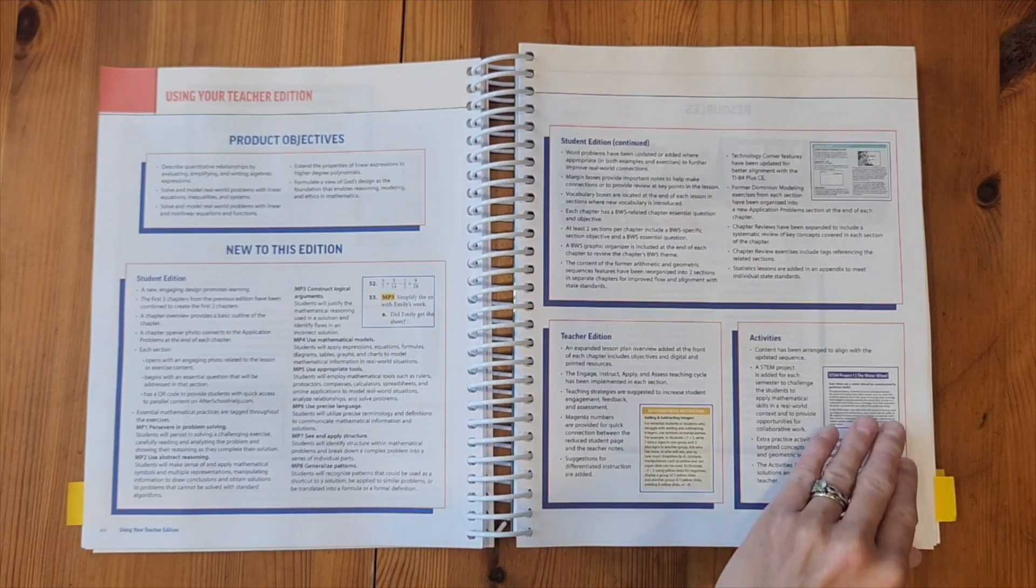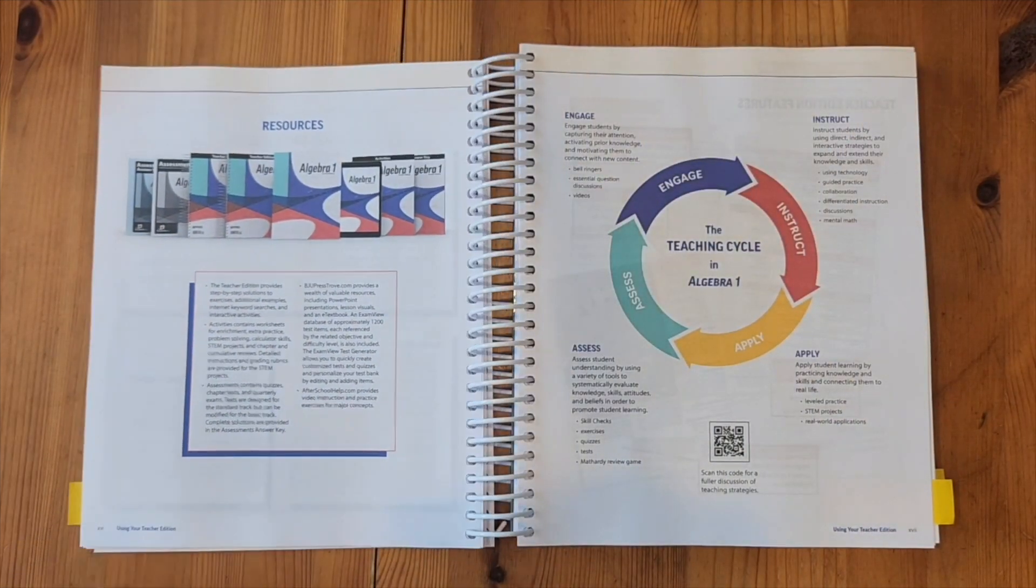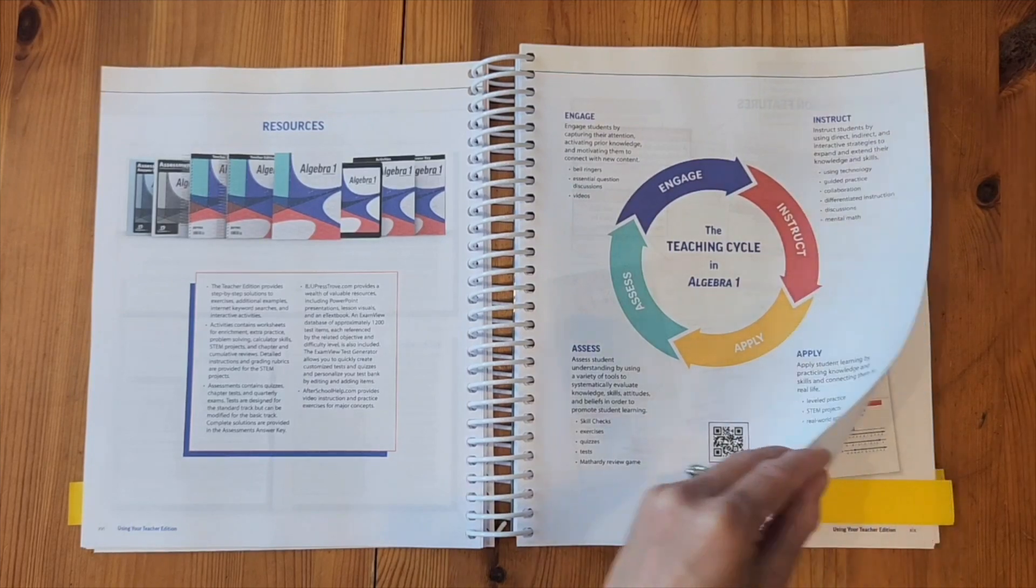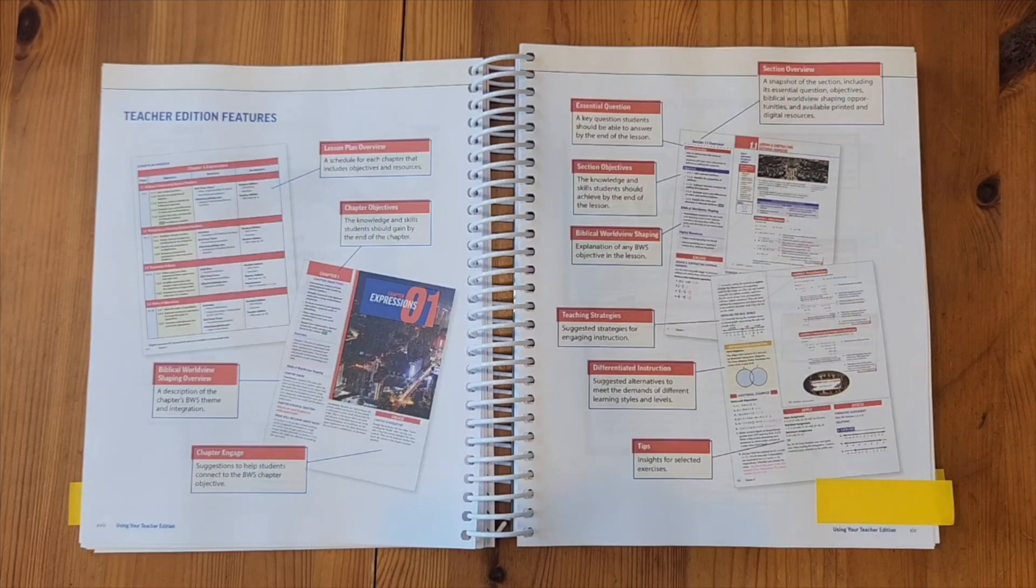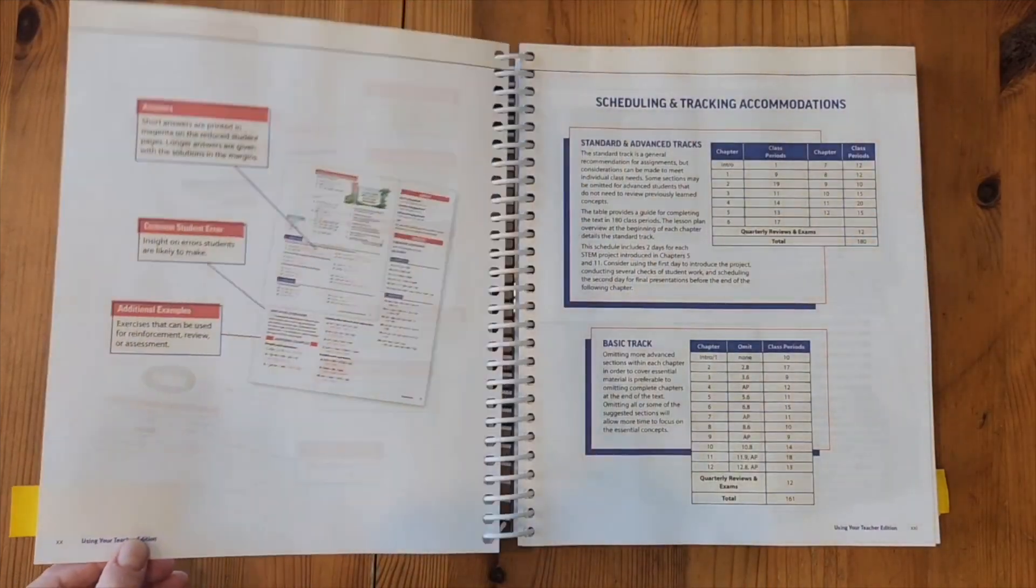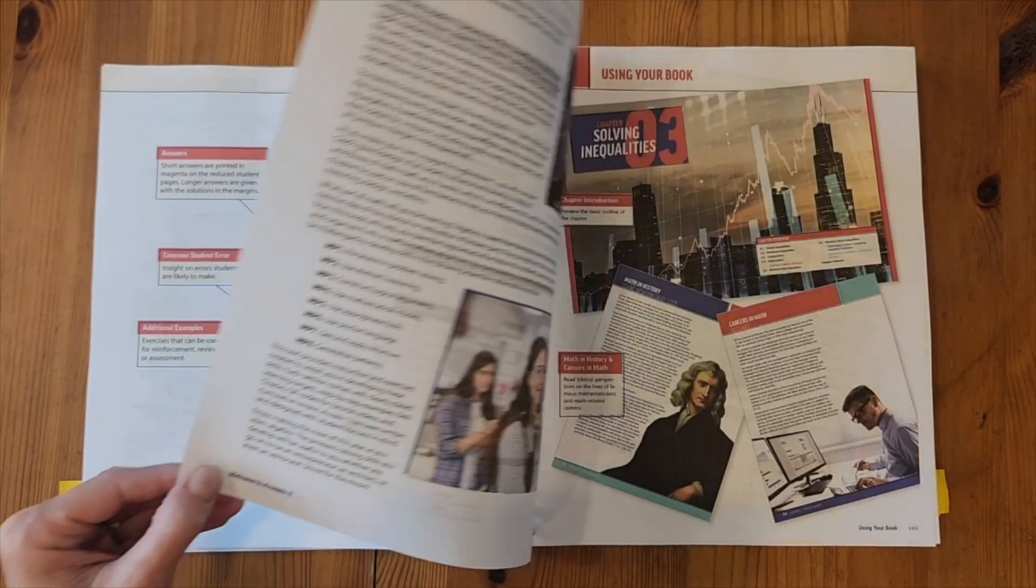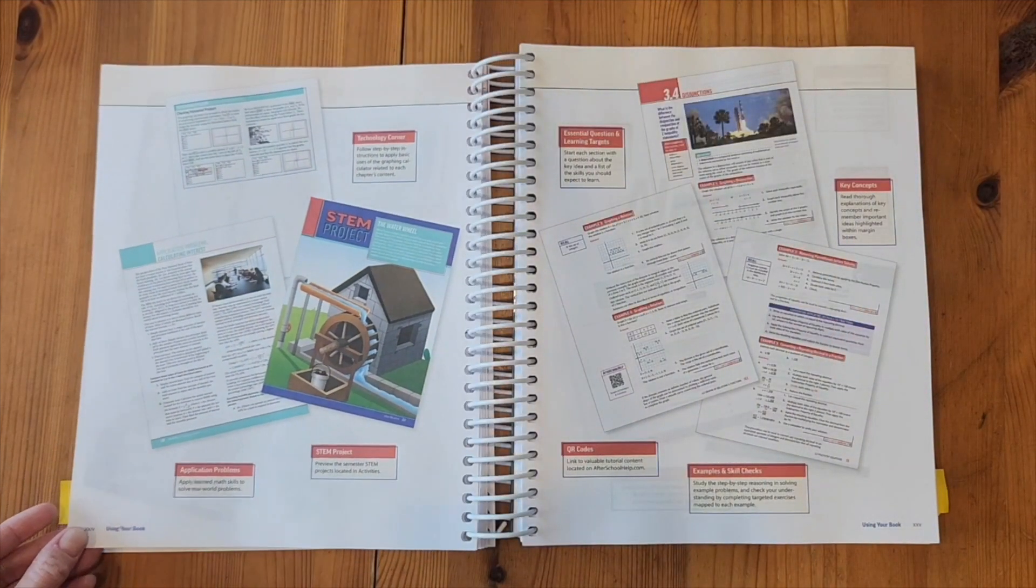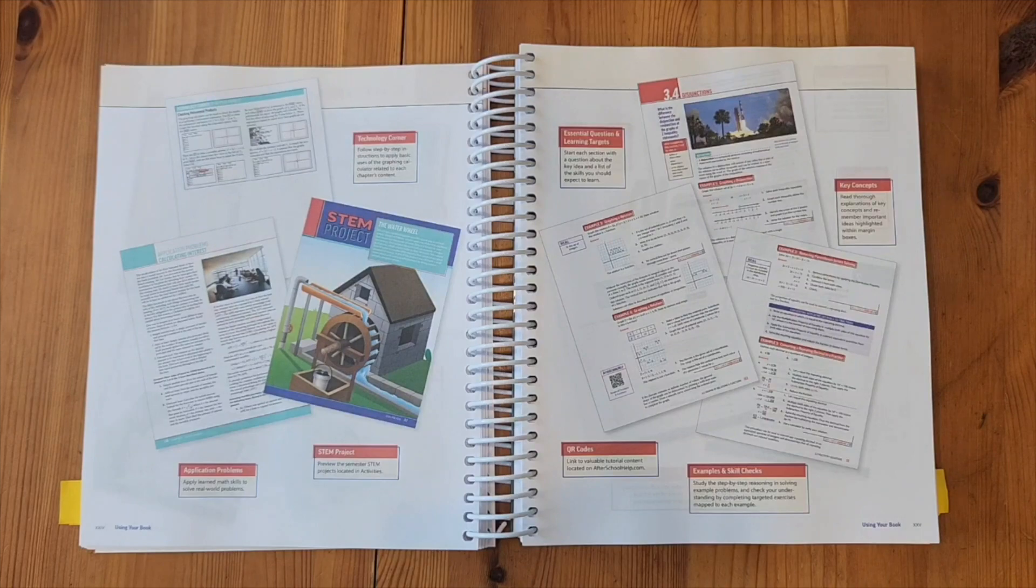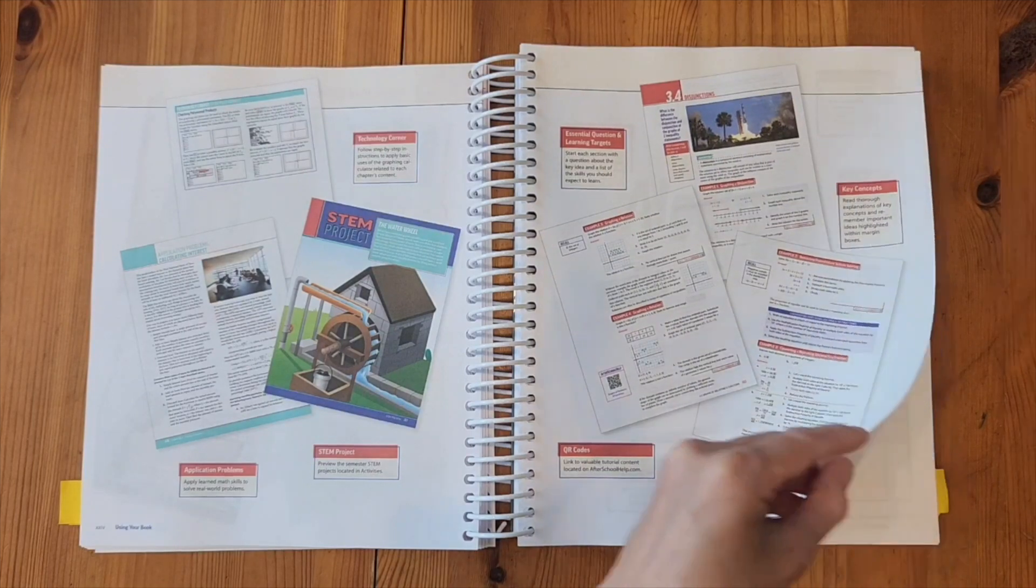We then have some information about how to use this teacher edition book and resources, teaching cycle, and then we come to this page about the teacher edition features. This is great information to read through before you begin teaching this class so you know where everything is laid out in this textbook. This is pointing out some information about the student book and some of the special features that are in that book as well.